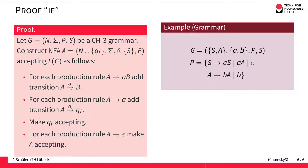Finally, for the rule that replaces a non-terminal A by the empty word epsilon, we mimic this in the automaton by simply making A an accepting state. In the derivation we can replace A by epsilon, so the derivation is complete — and this corresponds to accepting the word in the automaton.